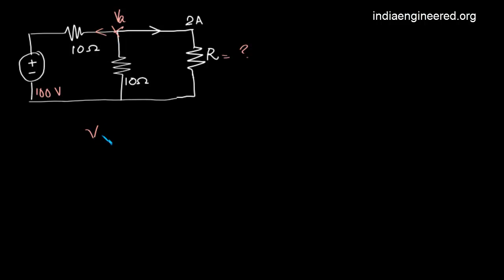Plus the current in this direction will be VA divided by 10. We already know the current here. It's given that 2 ampere current flows through R. That means plus 2 equals 0.